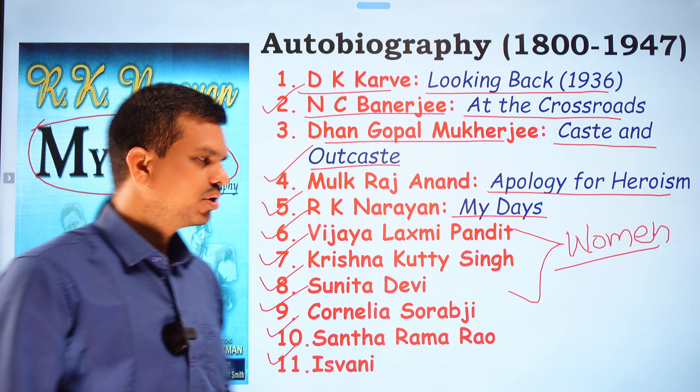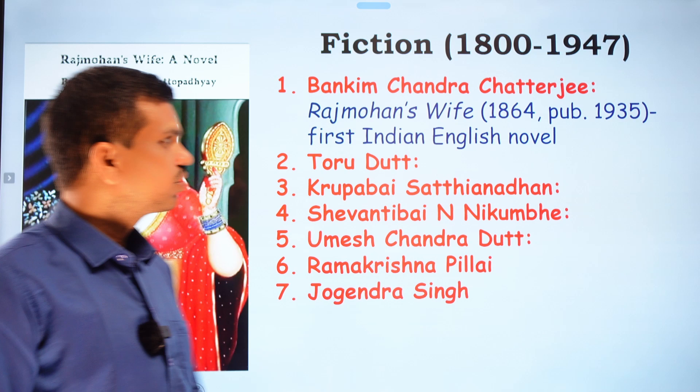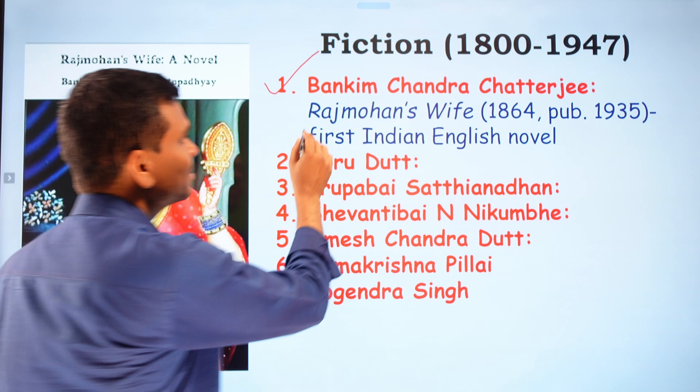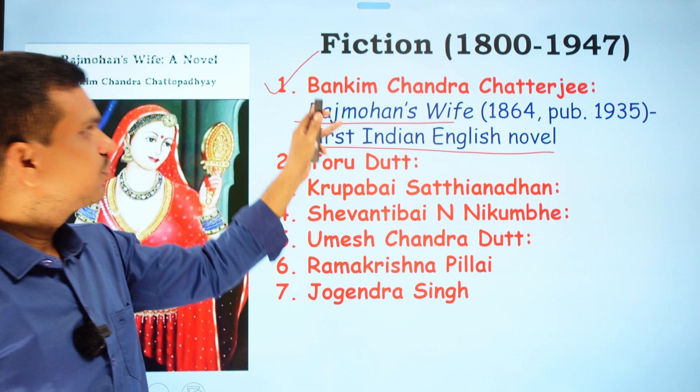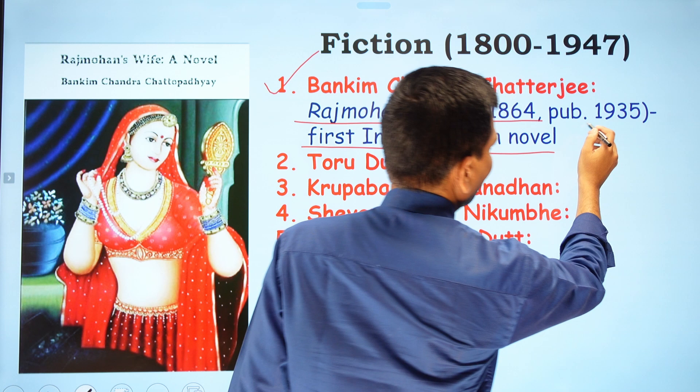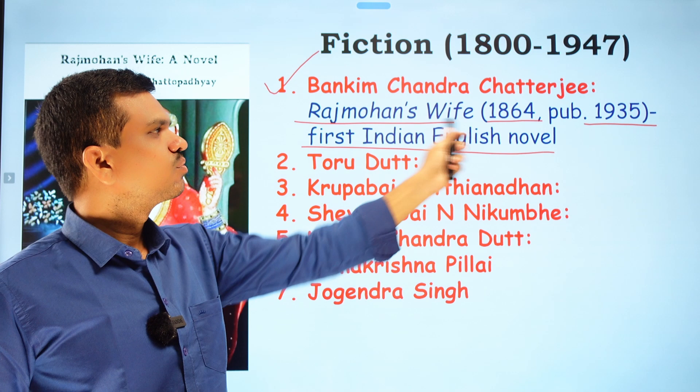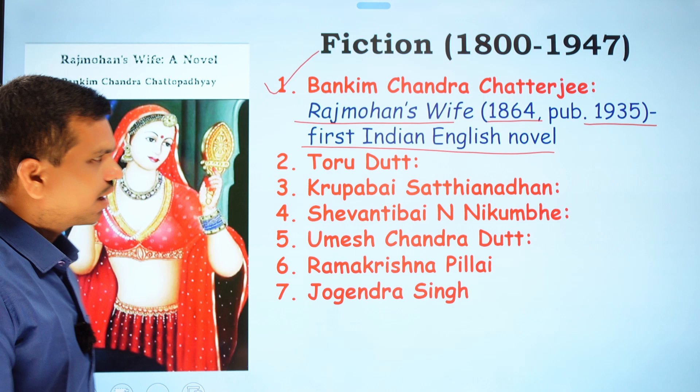Now let's discuss the development of fiction. Bankim Chandra Chattopadhyay's Rajmohan's Wife is considered the first Indian English novel. It was written in 1864 but published later in 1935. So the Indian English novel began as early as 1864.